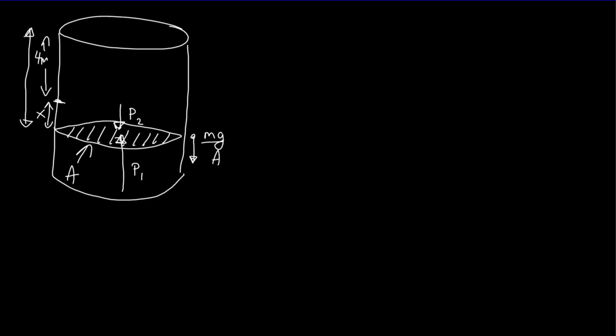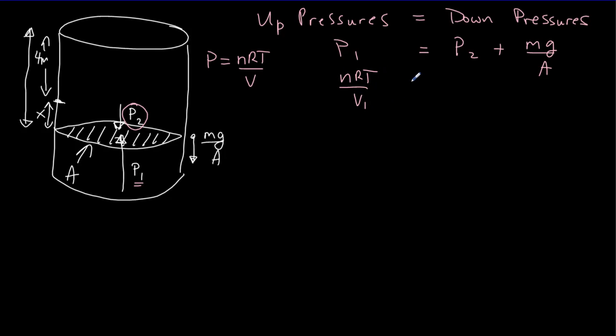Since our partition is at rest, upwards pressures have to balance off the down pressures. So upwards we've just got P1. Downwards we've got P2 plus this pressure created by the weight of the piston. Now for the pressures we can use the ideal gas law which says that the pressure will equal nRT all over the volume. So we'd have nRT all over V1 equals nRT all over V2 plus mg over A.